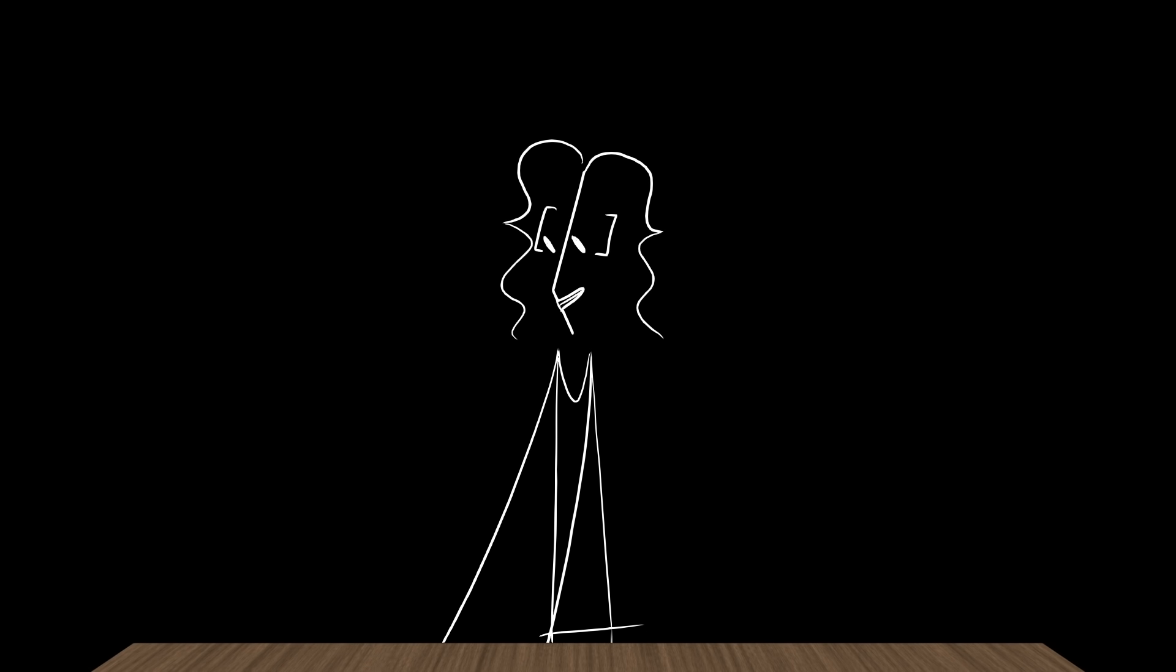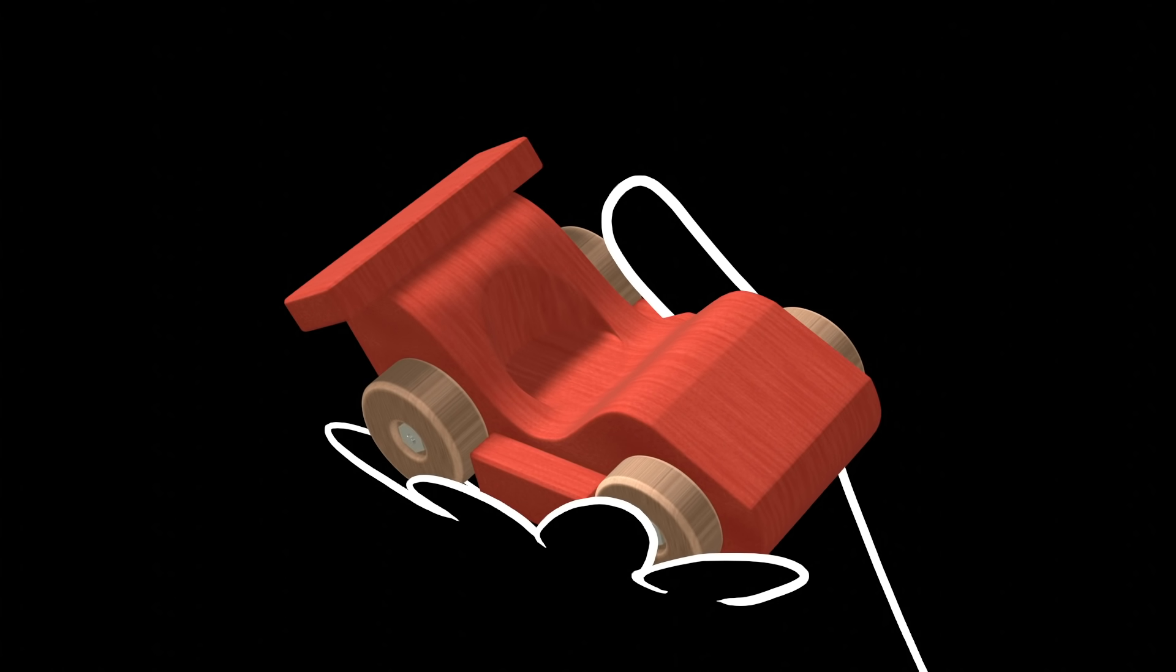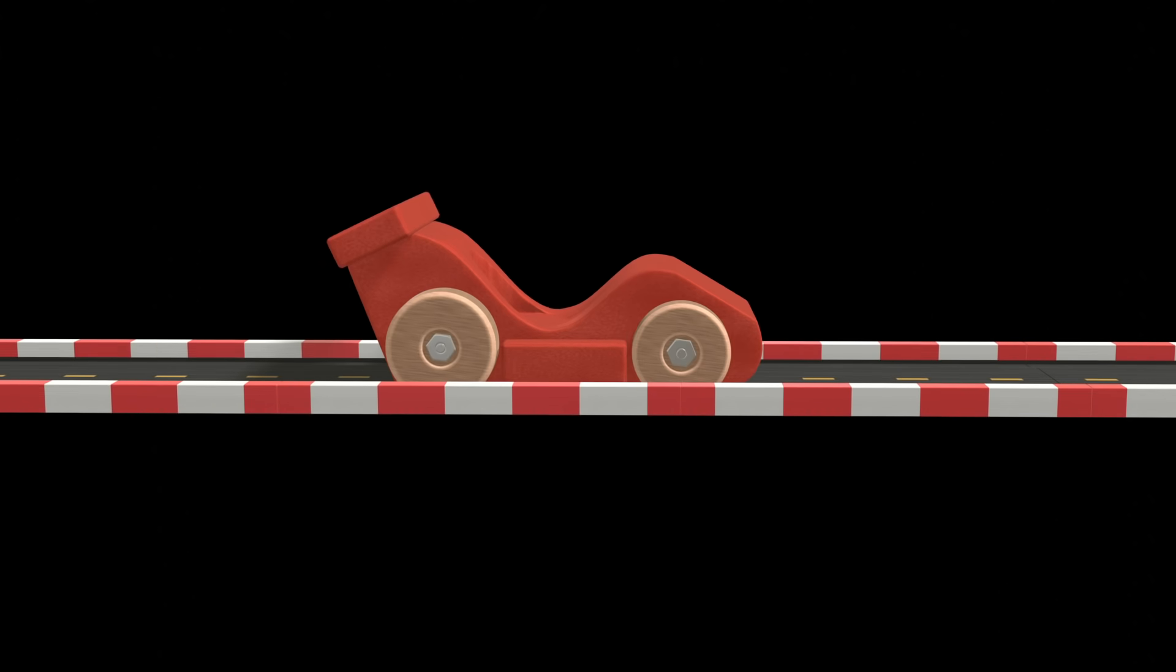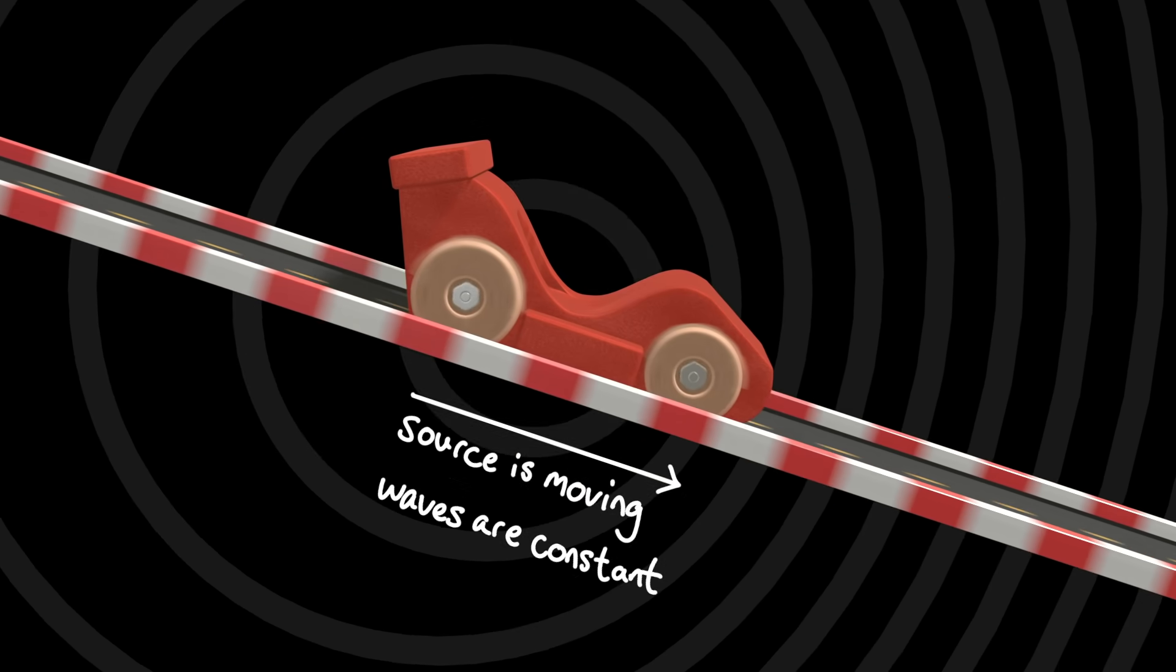We can start small, with some visual aid here, and think about how we might construct this sort of system. So, the Doppler effect occurs when an object is moving while generating waves. Because this source of the sound waves moves over time, and the waves are moving at a constant speed of sound, the crests of those waves get bunched together in the direction the object is moving.